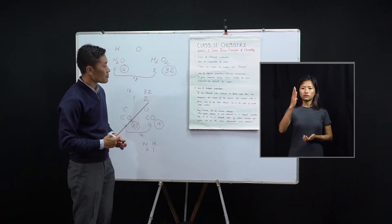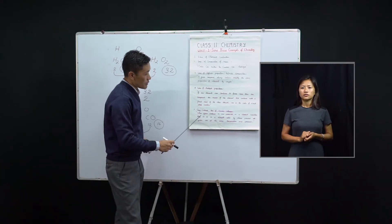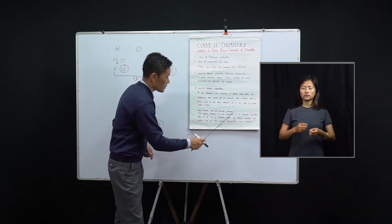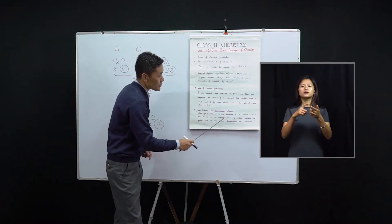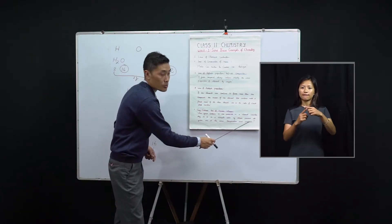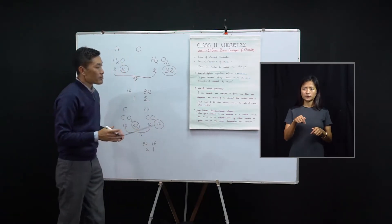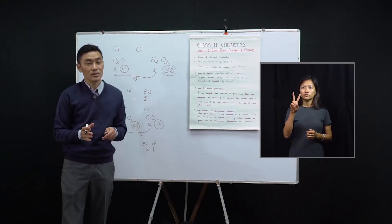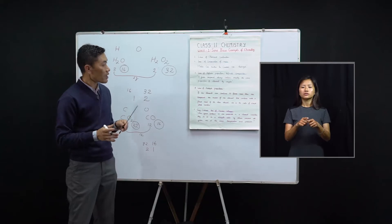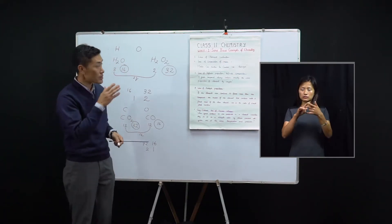The fourth law is Gay-Lussac's law of gaseous volumes. This law states that when gases combine or are produced in a chemical reaction, they do so in a simple ratio by volume, provided all gases are at the same temperature and pressure. According to this law, the volumes of gaseous reactants will bear a simple ratio between themselves and also with the volumes of the products, if the products are also gaseous. Let us understand this with an example.